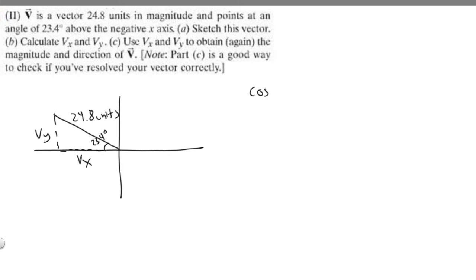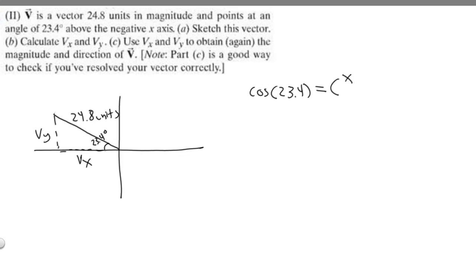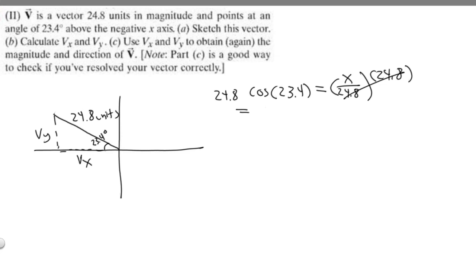We're going to take the cosine of our angle, which in this case is 23.4. We know that cosine equals adjacent over hypotenuse, so it's going to be equal to V sub x over 24.8 — I'll just call it x. So cosine of 23.4 equals x over 24.8. If we want to solve for x, we multiply both sides by 24.8, and we get that x equals 24.8 times the cosine of 23.4, which gives us 22.76.